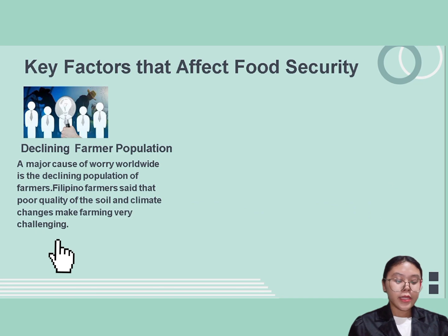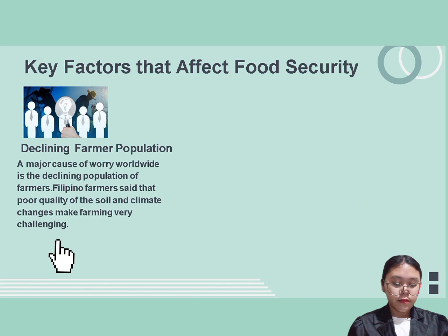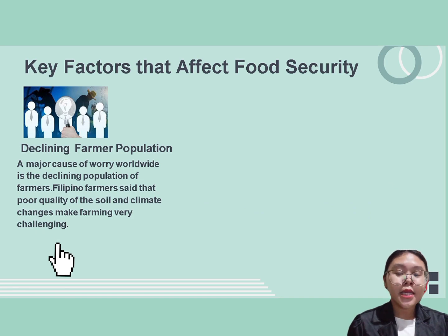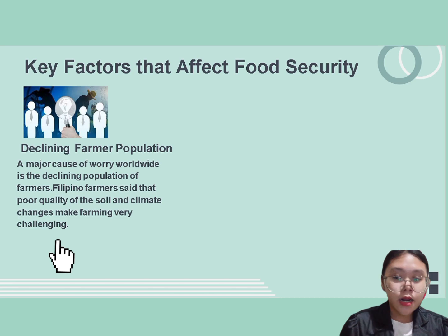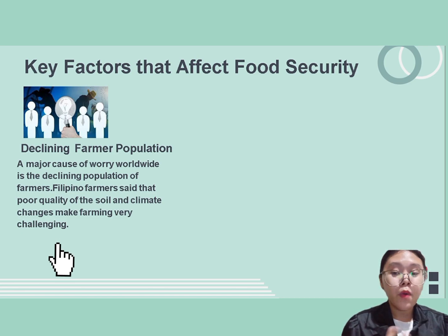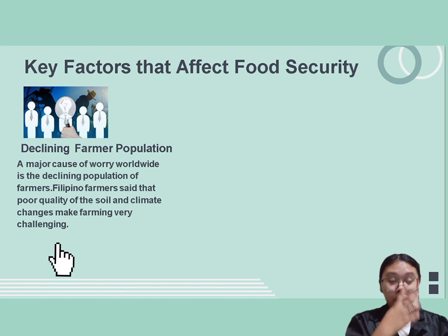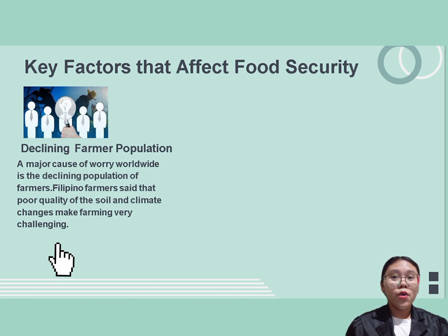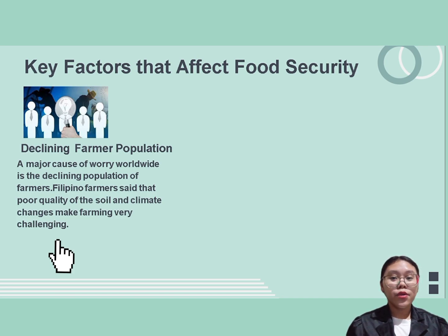Next is declining farmer population. This is the continuous decrease in the number of farmers in a country. Due to challenges they face such as climate change, drought, poor soil quality, and other difficulties, they are forced to change jobs and look for other work, such as moving to Manila. Because of this, we are lacking farmers, resulting in a shortage of crops since there is no one left to harvest them.